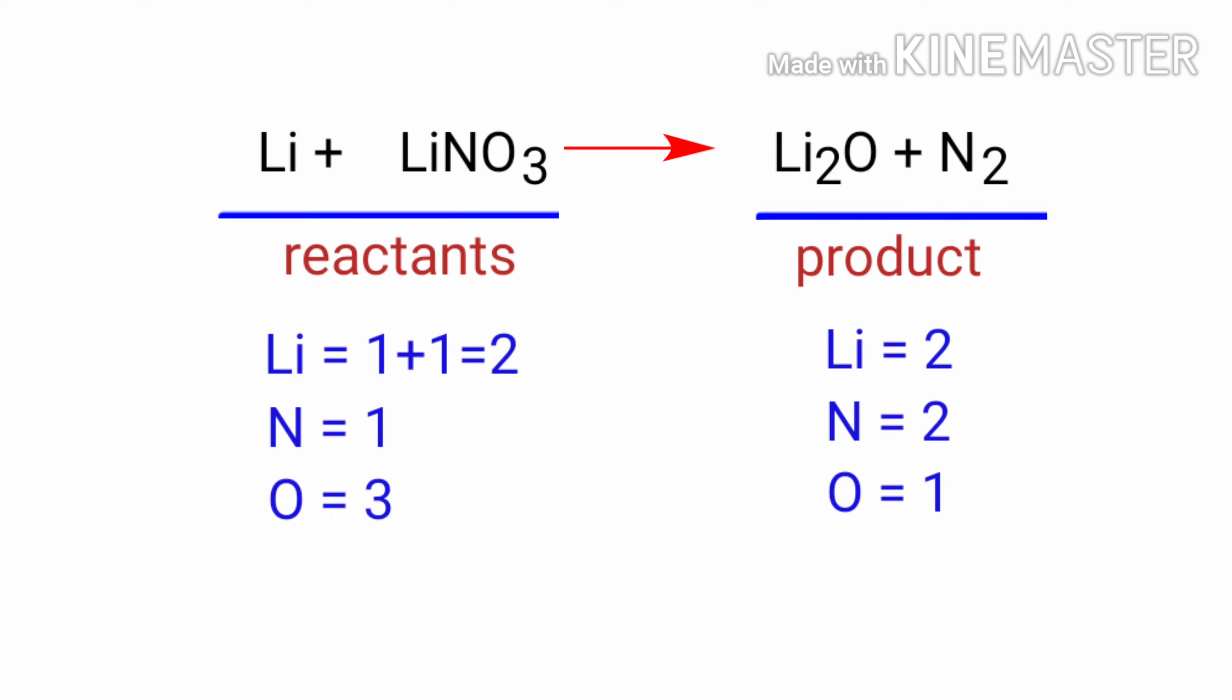In the reactants side, there are 2 Lithium atoms, 1 Nitrogen atom and 3 Oxygen atoms. And on the products side, there are 2 Lithium atoms, 2 Nitrogen atoms and 1 Oxygen atom. The number of atoms are not balanced on both sides.